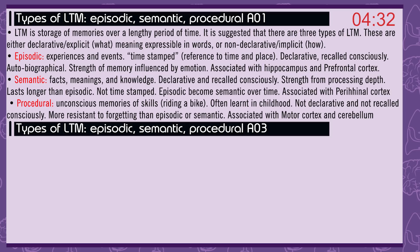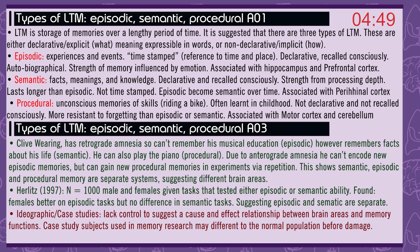Procedural memory: unconscious memories of skills, like riding a bike. Often learned in childhood. Not declarative and not recalled consciously. More resistant to forgetting than episodic or semantic. Associated with the motor cortex and cerebellum. Clive Wearing has retrograde amnesia so can't remember his musical education — episodic — however he remembers facts about his life — semantic — and he can also play the piano — procedural. Due to anterograde amnesia he can't encode new episodic memories, but he can gain new procedural memories in experiments via repetition. This shows semantic, episodic, and procedural memory are separate systems, suggesting different brain areas.